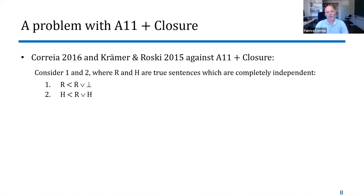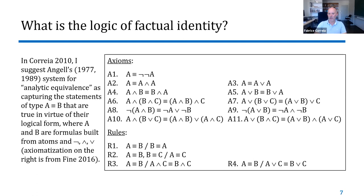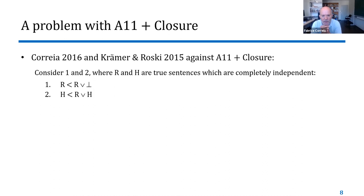Now, the first objection to the suggestion that this logic is the correct logic for factual identity. This is an objection that Kramer, Roski, and I found independently — we actually communicated before the papers were published. More precisely, the issue has to do with the combination of axiom A11 and closure. A11 is the axiom of distributivity of disjunction over conjunction; A10 is the dual axiom of distributivity of conjunction over disjunction.